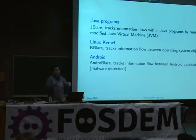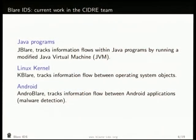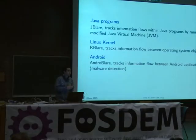Blair is actually a family of IDSs. We have it working in a Java virtual machine — we modified the JVM so you don't have to modify the actual program, and you can run vanilla Java software and follow the information flow through it. We also modified the Linux kernel, which I'll talk about in more detail. And since the Android kernel is based on the Linux kernel, we got it working on Android too, which required some additional work.